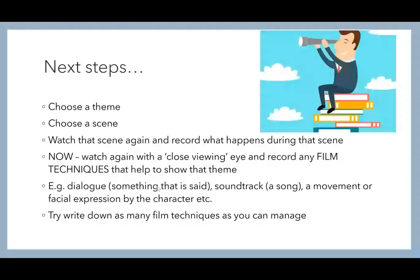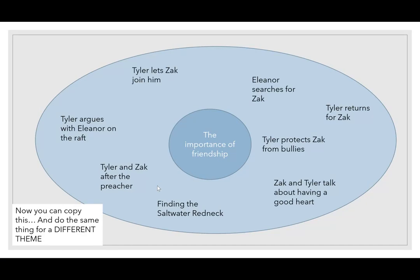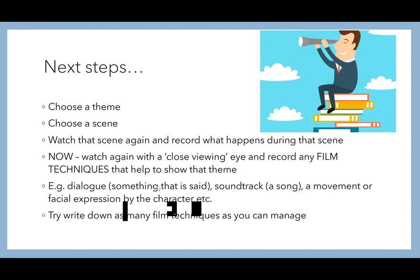Assuming you're back and ready for the next step: you've got the importance of friendship and one other theme. Now you're going to choose one scene from those. You're going to watch that scene again — either access the whole movie or go back to the clips in the files. When you watch it, you're going to record what happens in that scene as a description. Then you're going to watch it again with a close viewing eye, looking for film techniques — camera shots, dialogue, anything like that — things you can see and hear that help to show that theme.